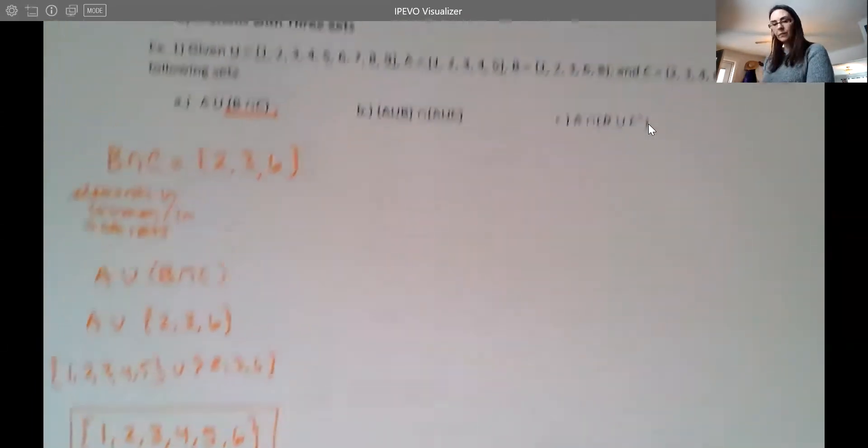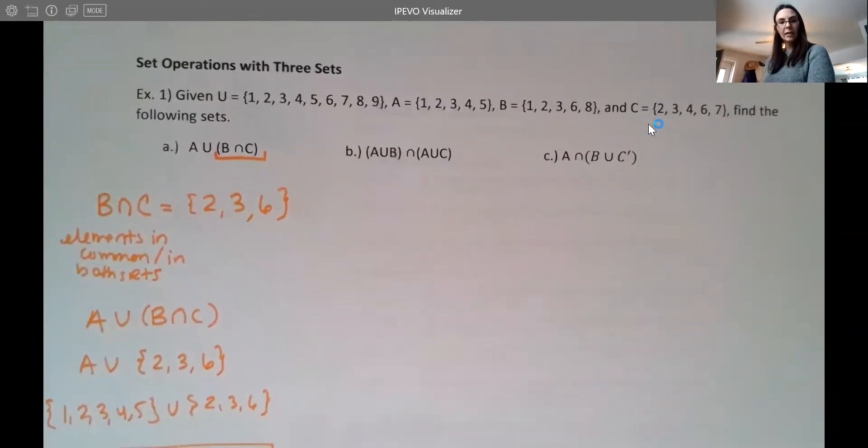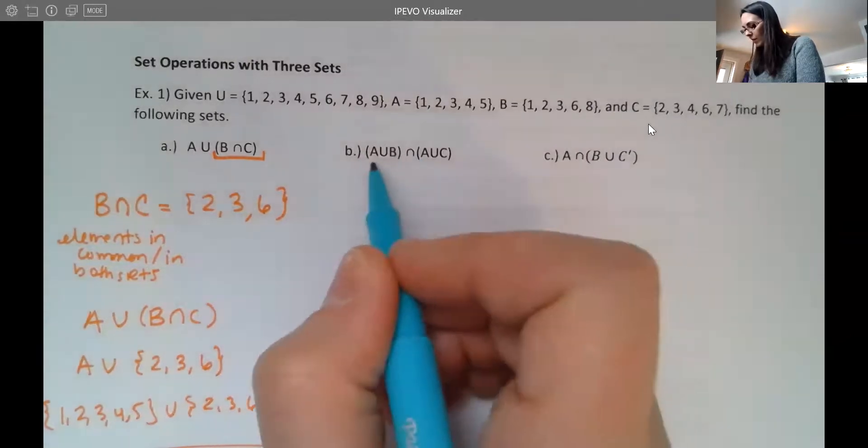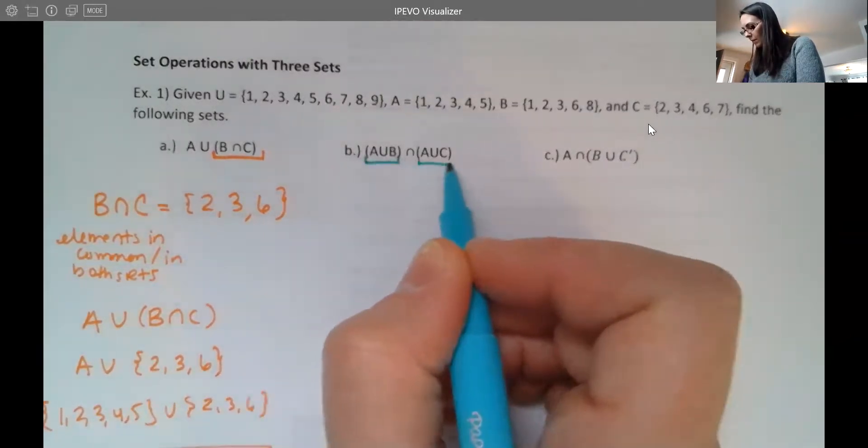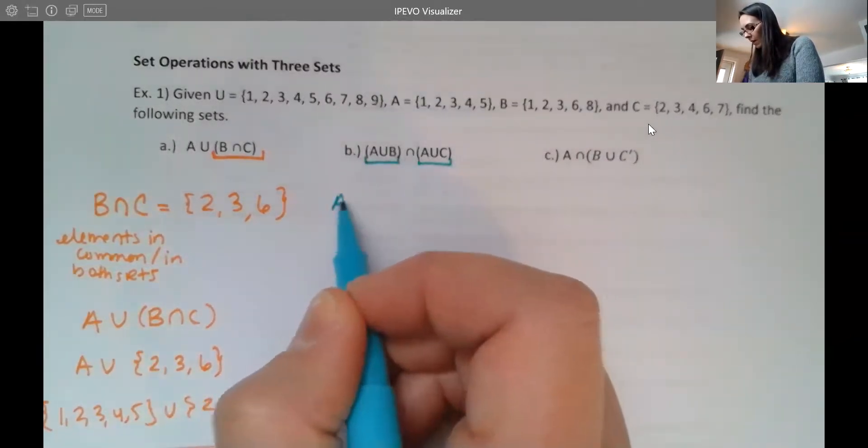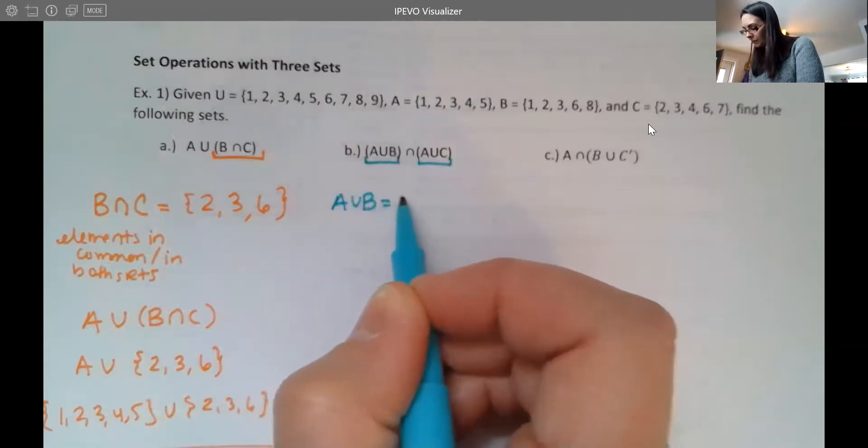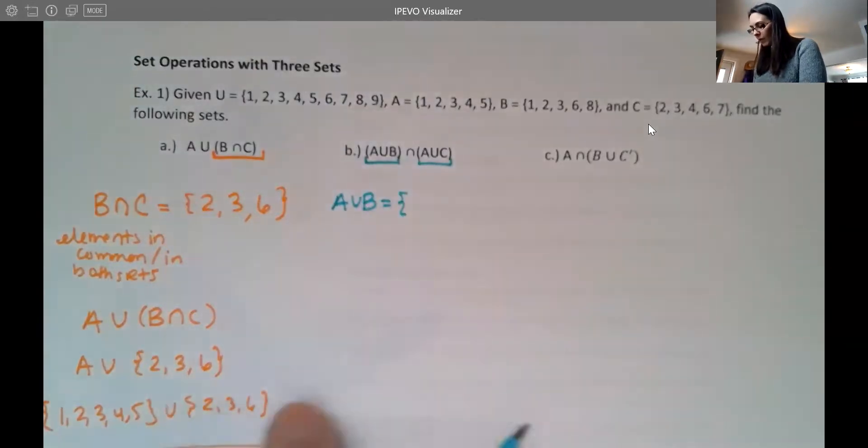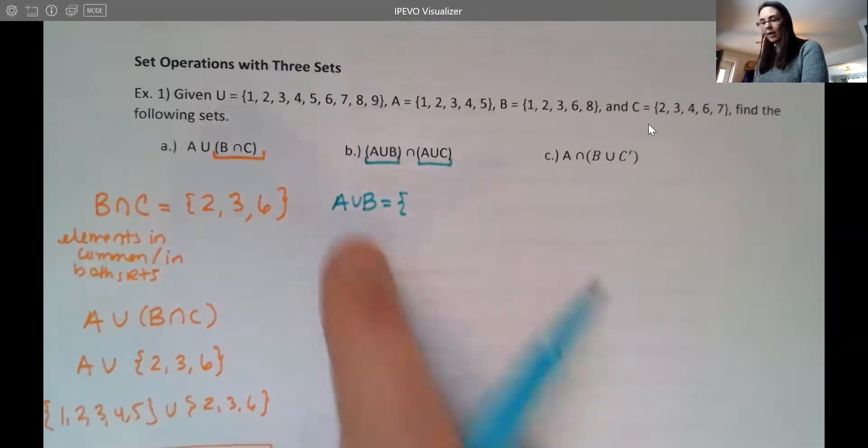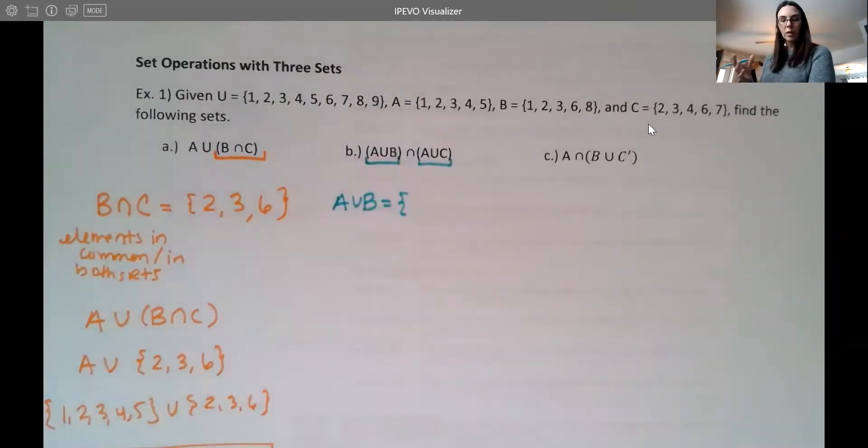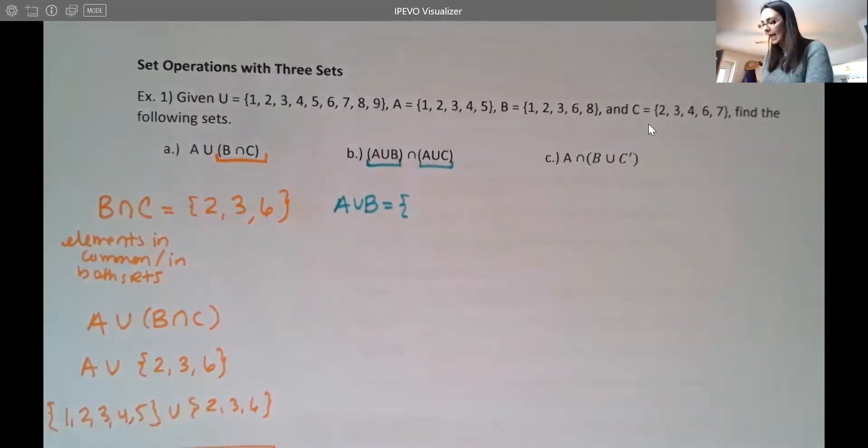All right, let's do the next one. Okay, so here I have two sets of parentheses. So before I do anything with the intersection in the middle, I'm going to do this and I'm going to do this. So I'm going to find A union B. Now remember, if you have a union, a U, think about unite, bring them together. So I'm going to combine all elements in A and B.